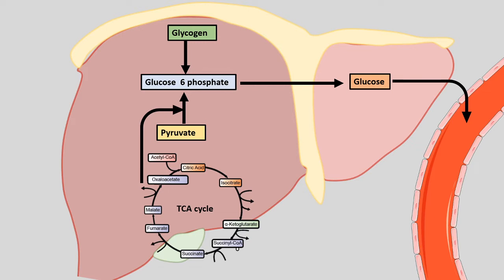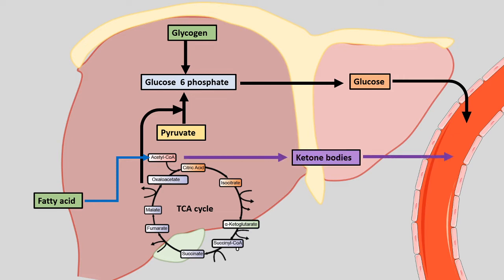The liver also has alternative sources such as fatty acids, which come from the adipose tissue. This fatty acid would be oxidized to acetyl-CoA, and acetyl-CoA can be channeled into the TCA cycle. But for long-term fasting, acetyl-CoA would generate ketone bodies, and the ketone bodies would also be secreted into the bloodstream.